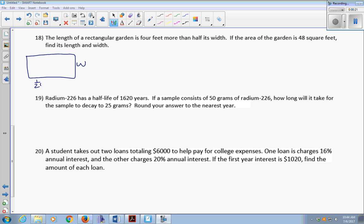The area is 48 square feet, and area is length times width, so W times one-half W plus 4 should be 48. Distribute my W, so I have one-half W squared plus 4W. Subtract the 48 from both sides, and now I have a quadratic equation to solve. I can solve it either by factoring or the quadratic formula.